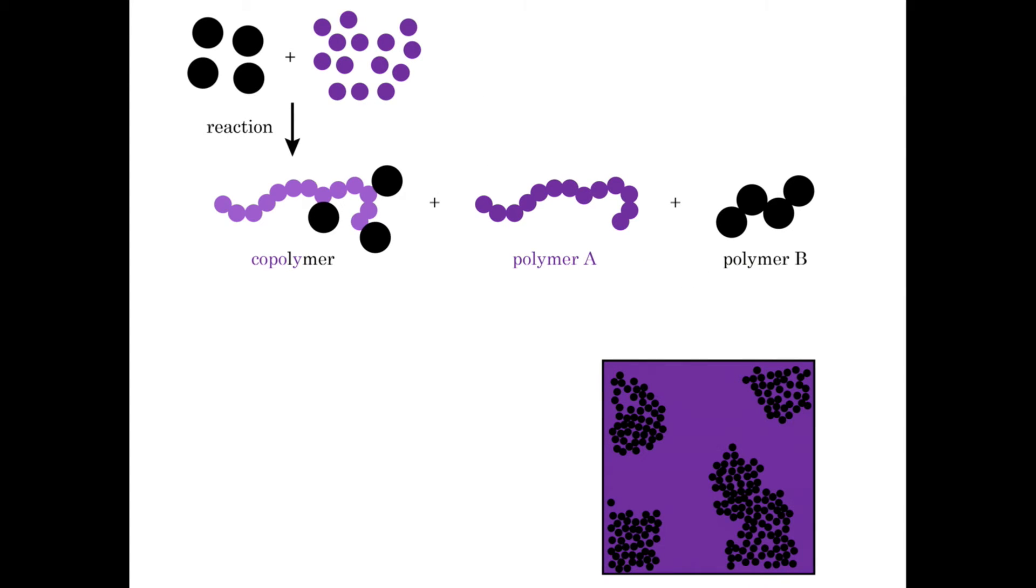We did this by adding a copolymer, made by combining one unit from each of the two polymers in the solar cell. It would be attracted to both polymers because it contains a piece of each and creates a barrier between them similar to honey.